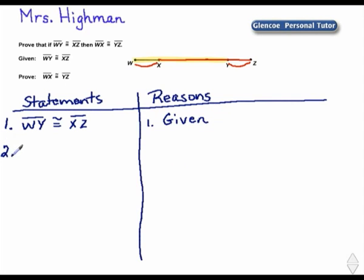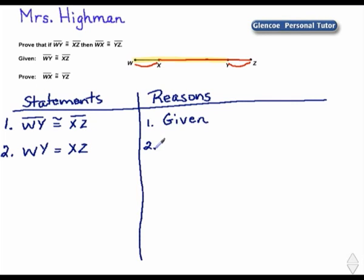Our second statement: since we know that those two segments are congruent, that means that the length of W-Y is equal to the length of X-Z. The reason for that is by the definition of congruence.